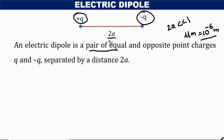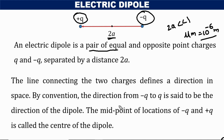The reference point for any measurement in the case of an electric dipole is the center of the two-point charges. For measuring any distance, the center of the two-point charges is the reference point — that means both charges plus q and minus q are at a distance of a from the reference point placed at the midpoint. The line joining the two-point charges is known as the axis of the dipole, directed from negative charge towards the positive charge.